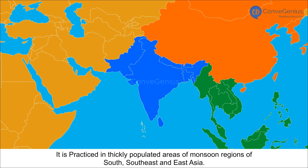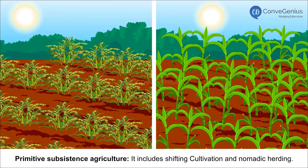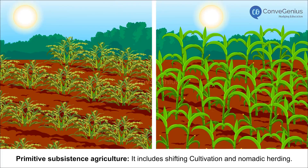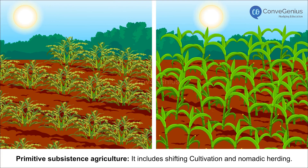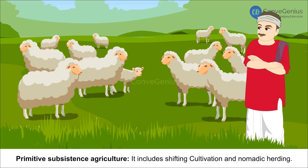Intensive Subsistence Agriculture is practiced in thickly populated areas of monsoon regions of South, Southeast and East Asia. Primitive Subsistence Agriculture includes shifting cultivation and nomadic herding.